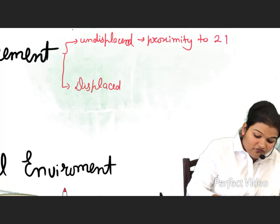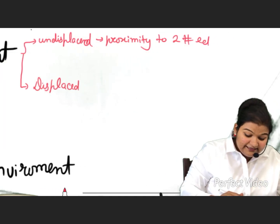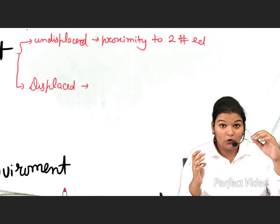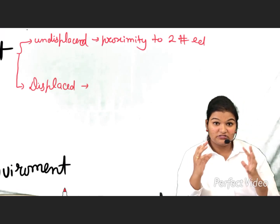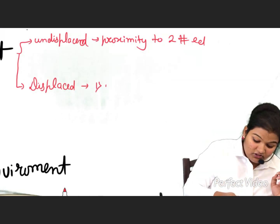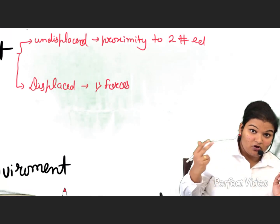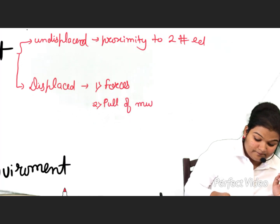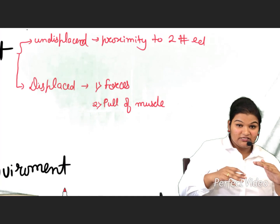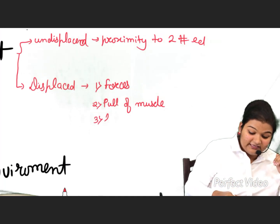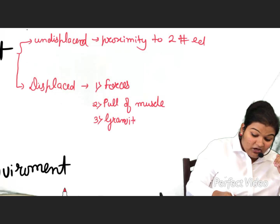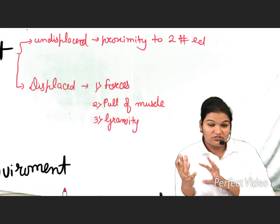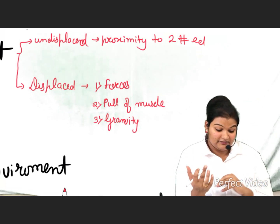In displaced fracture, the two fractured ends are displaced. The factors causing this displacement are: first, the force by which the fracture occurred; second, the pull of muscles; and third, gravity. All these affect how much displacement occurs and whether the fracture is undisplaced or displaced.